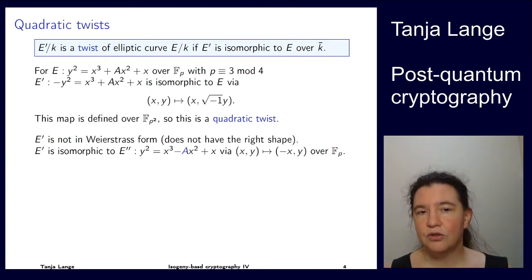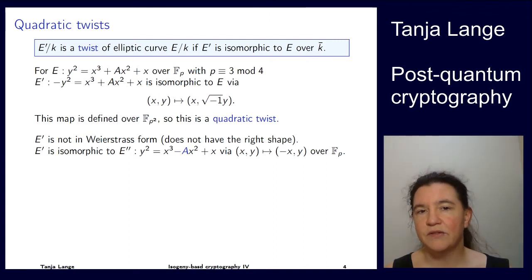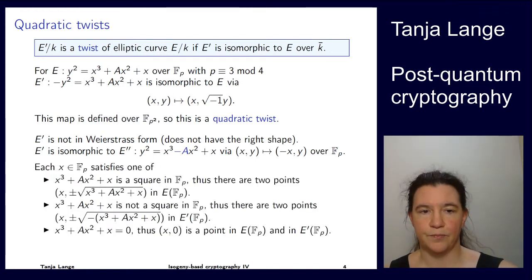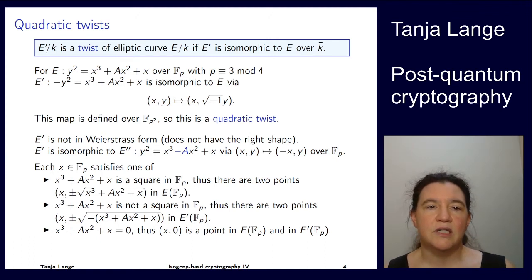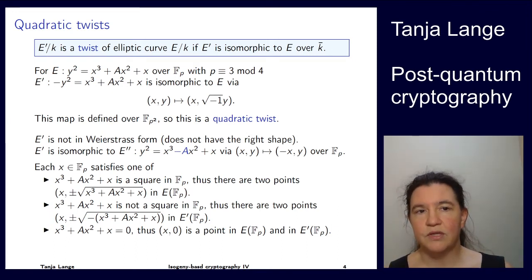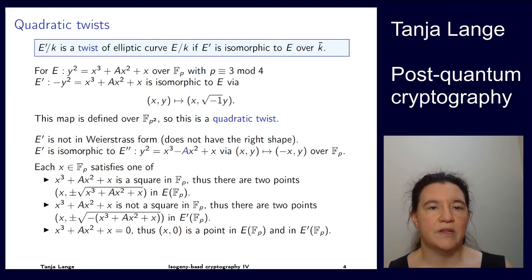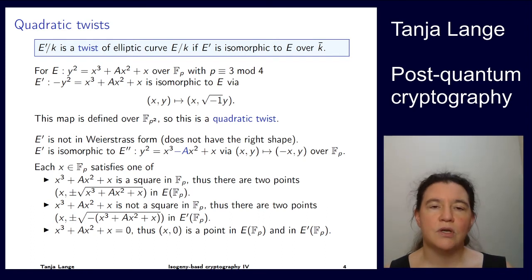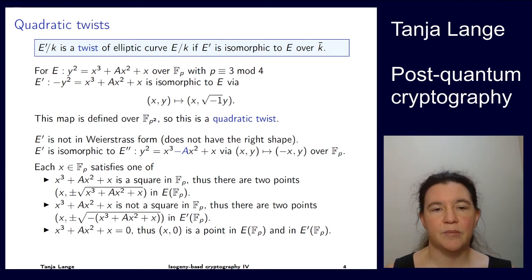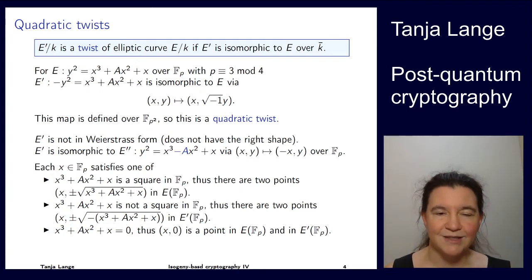E double-prime has the normal Weierstrass form, and the sequence of these two maps goes from E to E'' with an extension field of degree 2. Now let's concentrate on E and E prime to learn something about the number of points. When you plug in some x-coordinate for the E curve, it can happen that x³ + ax + b is actually a square, meaning you get two points on E over F_p.